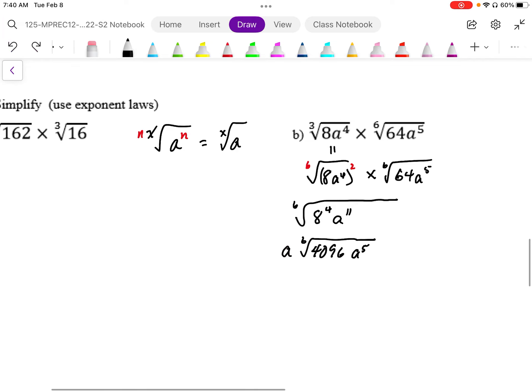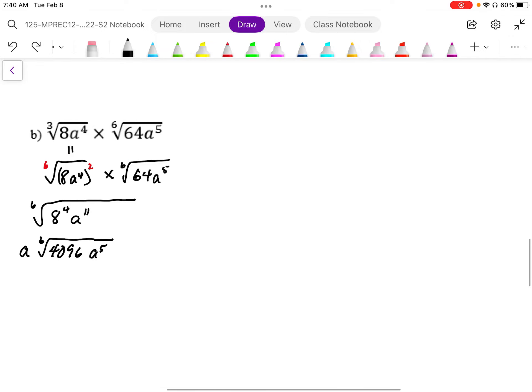It says here, simplify using exponent law. So we could use an alternative and just write this as exponent. So we have 8 to the power of 1 third. 8 to the power of 4 thirds.